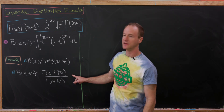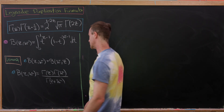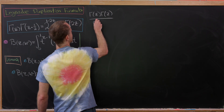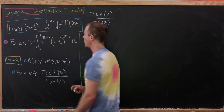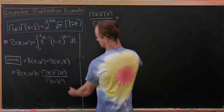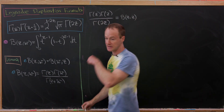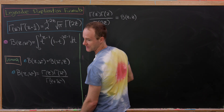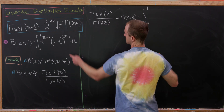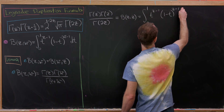We now apply this formula with w = z. So the numerator is Γ(z)·Γ(z) and the denominator is Γ(2z), motivated by the fact that our final formula involves Γ(z) and Γ(2z). By the lemma, Γ(z)²/Γ(2z) = B(z, z), which by definition equals the integral from 0 to 1 of t^(z-1)(1-t)^(z-1) dt.